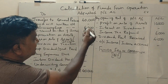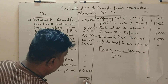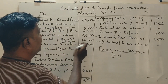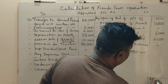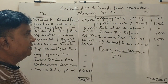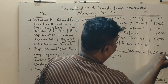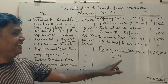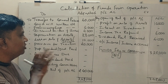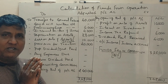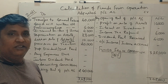Credit side — debit side total: 3,48,000 rupees. 10,20,000 minus 3,28,000 rupees — so the funds from operations is 3,28,000 rupees. This is the BCom 2011 question. Thank you so much.